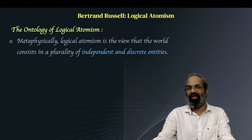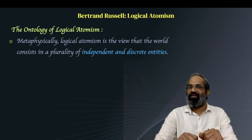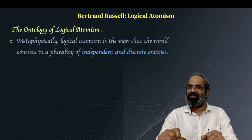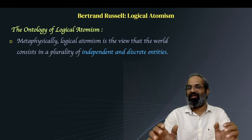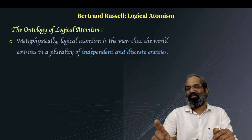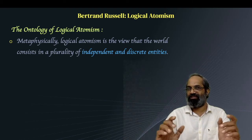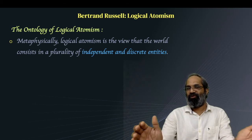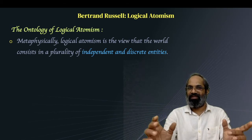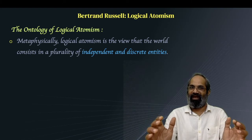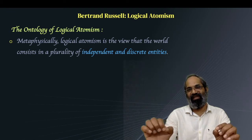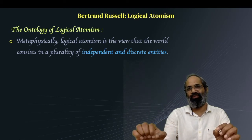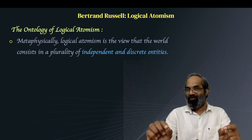Metaphysically, logical atomism is the view that the world consists of a plurality of independent and discrete entities. This position goes against idealistic metaphysics, especially that of Hegel and Schelling — for them, reality is one indivisible absolute. But Russell's position, the logical atomist position, is in opposition to this idealism. Here the world is not seen as an absolute entity, but as a collection of independent and discrete entities.